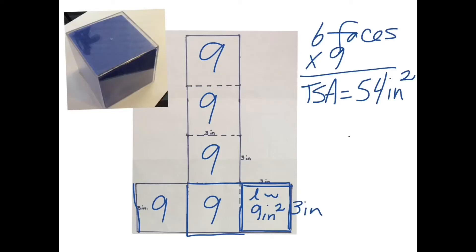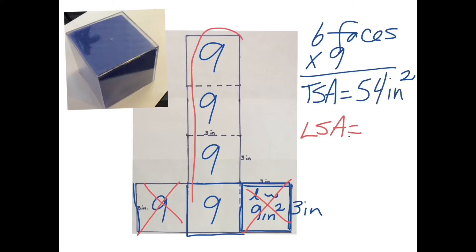If someone asks for the lateral surface area, that means everything except for the bases. In this case, the lateral surface area would be the four sides that fold up and around — four sets of nine — giving us a lateral surface area of 36 square inches.